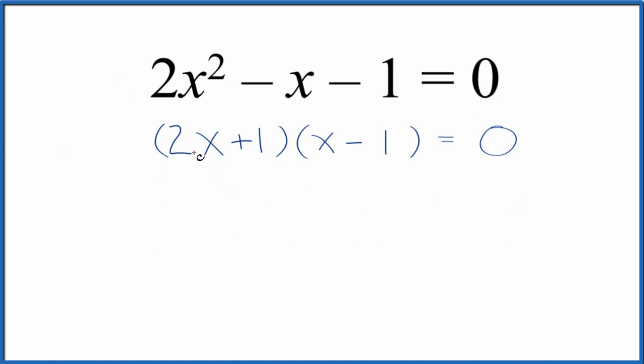So we could say 2x plus 1 equals 0, and 2x equals negative 1, and divide both sides by 2, and we end up with x equals negative 1 half.